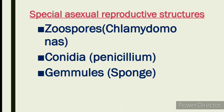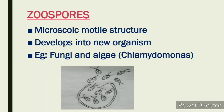Now let's see what are the different structures that help for asexual reproduction. First one: zoospores — example, Chlamydomonas. Second: conidia — example, Penicillium. Third: gemmules — example, sponges. Zoospores are microscopic, motile structures which develop into a new organism. Example: fungi and algae.